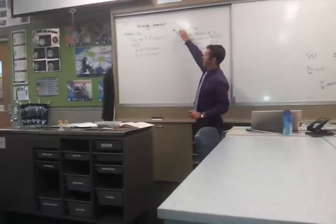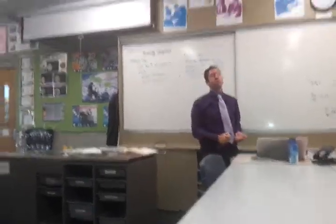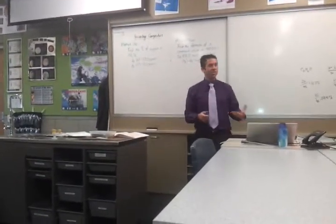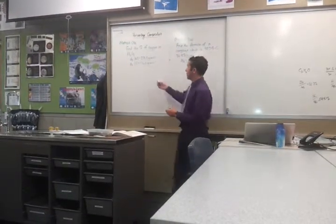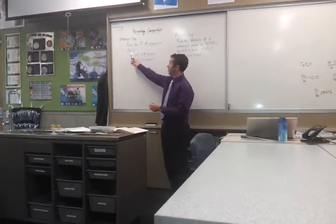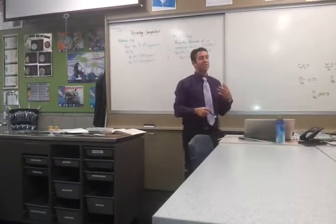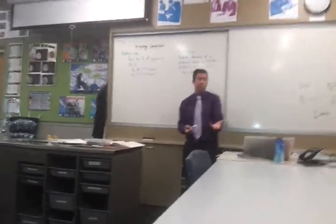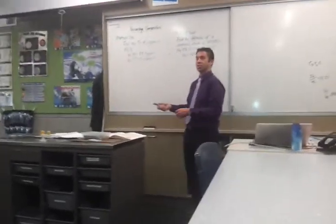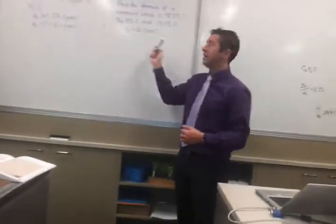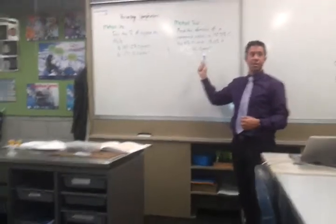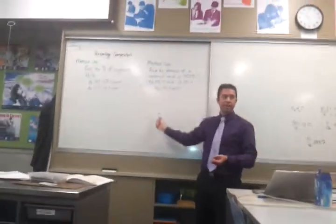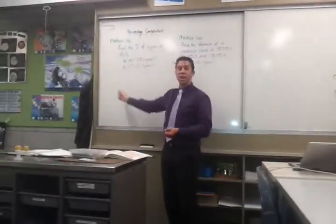So what we're going to look at today is percentage composition — two things you might have to be able to do. Method one is finding out what percentage of a compound is a particular element. So this iron compound, aluminum oxide, has got aluminum and oxygen, and we're going to find out what percentage is actually oxygen. The second method is where we're given the percentage composition of something and have to work out its formula. This one's a lot harder — more your merit/excellence question. This first one is more your achieved question.